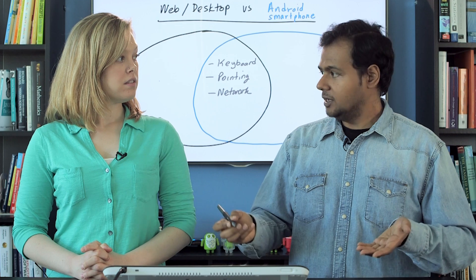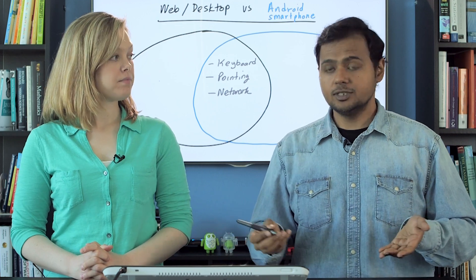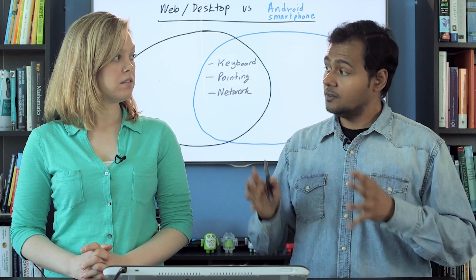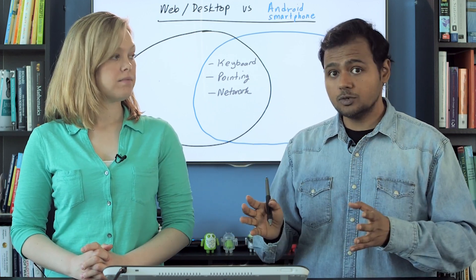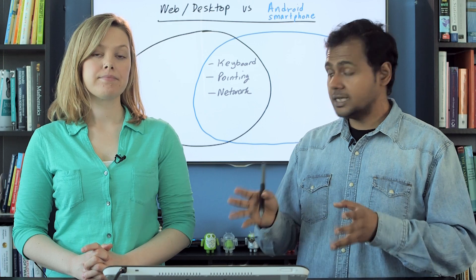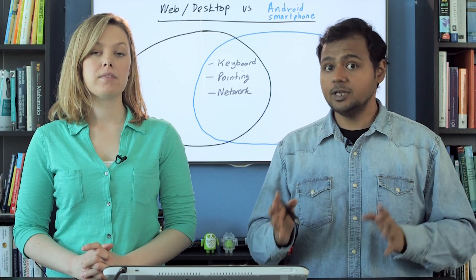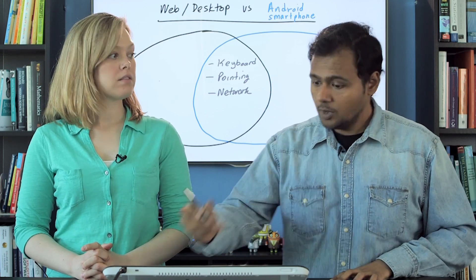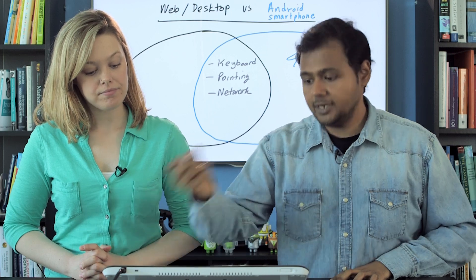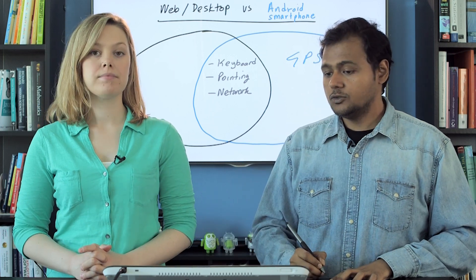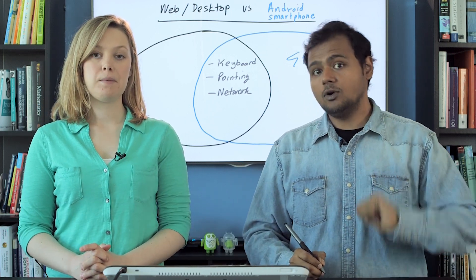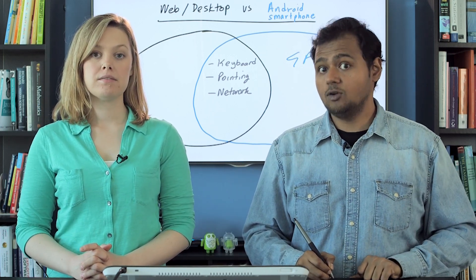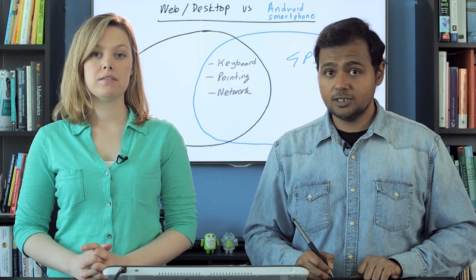There are a lot of similar input sources, but the power of Android truly lies in the input sources or sensors that are available on Android that are simply not available on web and desktop. Exactly. One simple example is GPS. So can you name all the other input sources that are available on Android that are not available on web and desktop?